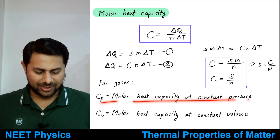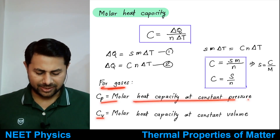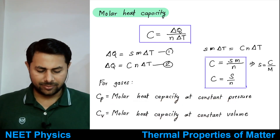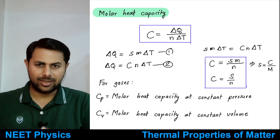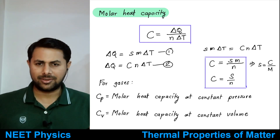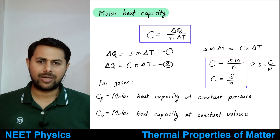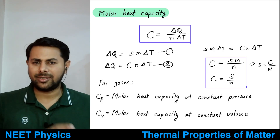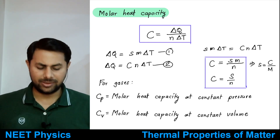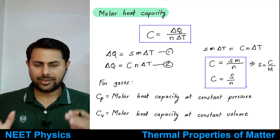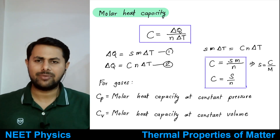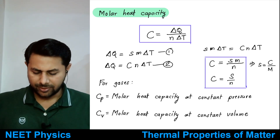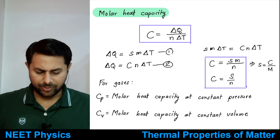Cp is the molar heat capacity at constant pressure and Cv is the molar heat capacity at constant volume — both are for gases. When two substances are in contact at different temperatures, heat is conducted from the body at higher temperature to the body at lower temperature. The amount of heat given away by the hot body equals the amount absorbed by the cold body.